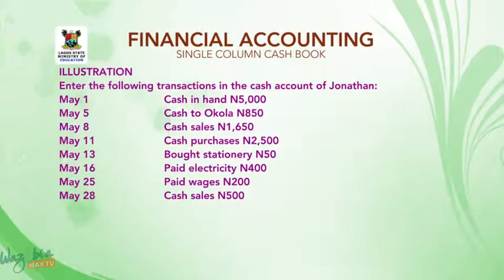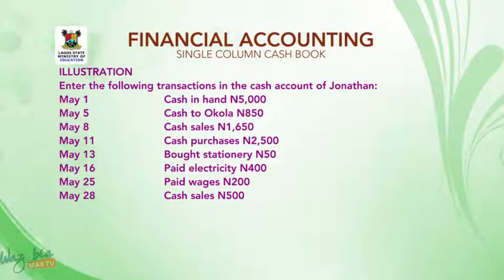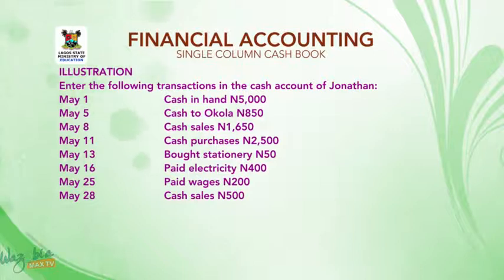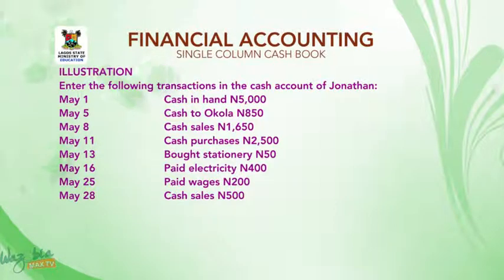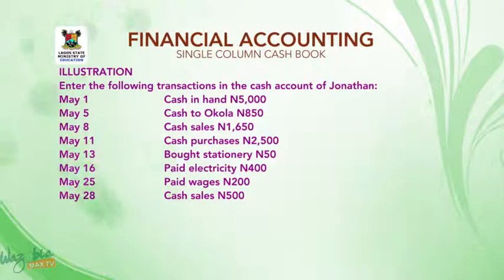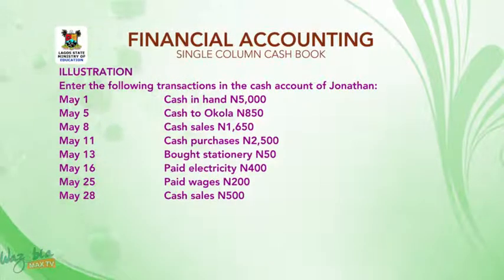Illustration: Enter the following transactions in the cash account of Jonathan. May 1 — cash in hand, 5,000 naira. May 5 — cash to Okola, 850 naira. May 8 — cash sales, 1,650 naira. May 11 — cash purchases, 2,500 naira. May 13 — bought stationery, 50 naira. May 16 — paid electricity, 400 naira. May 25 — paid wages, 200 naira. May 28 — cash sales, 500 naira.